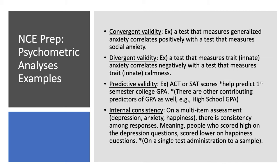Predictive validity — an example of this — ACT and SAT scores are part of the equation that help predict first semester GPA. There are other variables that help predict that, and one of those would be high school GPA.